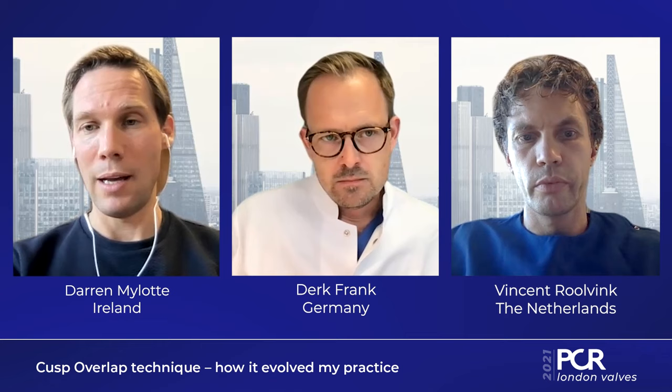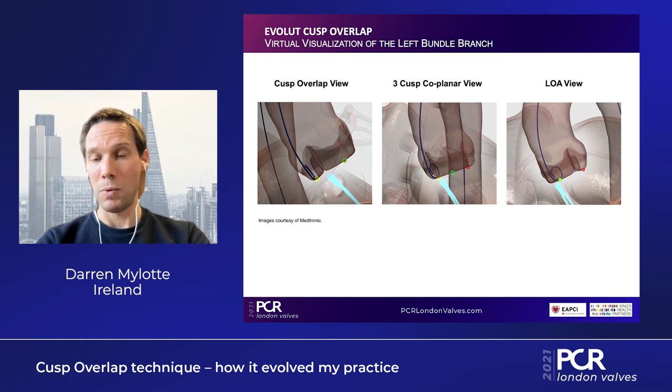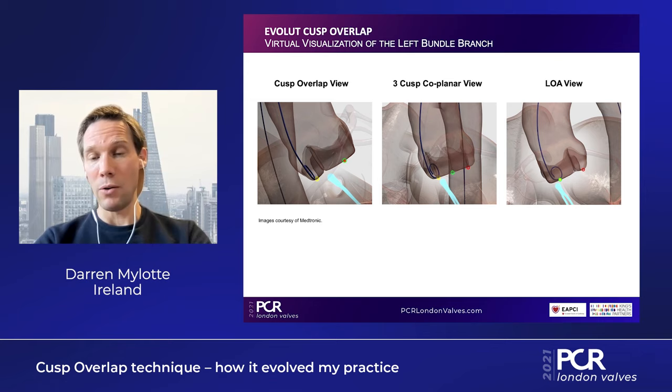We noticed that operators who implanted in RAO caudal tended to have lower pacemaker rates than those who implanted in the traditional three-cusp view in LAO cranial. An iteration of this RAO caudal view was developed known as the cusp overlap view. What this view simply does is overlap the right and left cusps of the aortic valve, isolating the non-coronary cusp. This tends to occur in about 90 percent of people in an RAO caudal view. When we implant in this view there is usually no parallax in the anatomy and no parallax in the delivery catheter as we start to deploy, and it turns out that this view reduces LVOT foreshortening, giving us a really accurate implant depth so that if we want to implant at three millimeters we can safely do so.